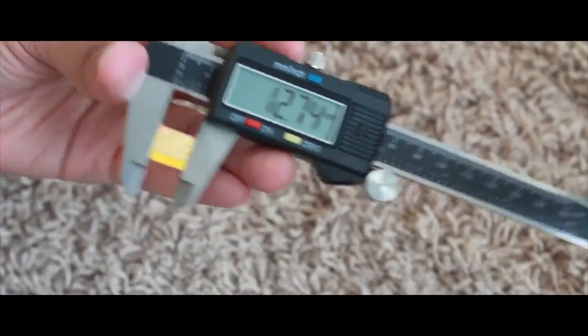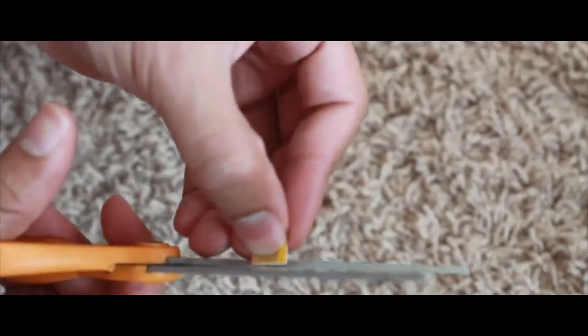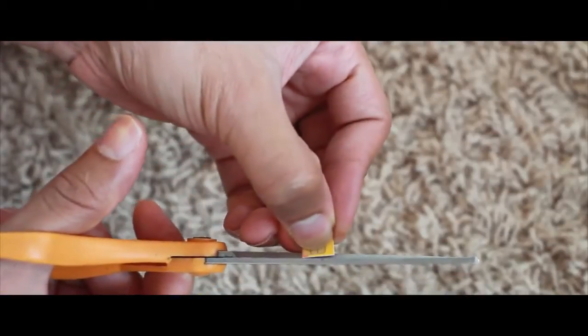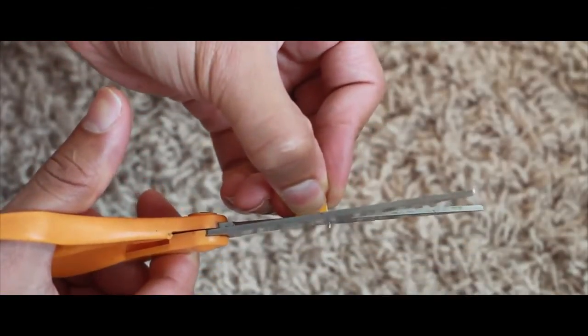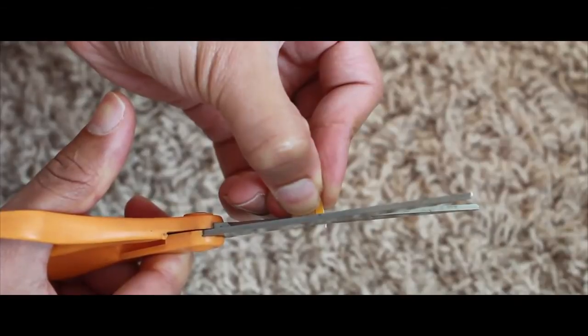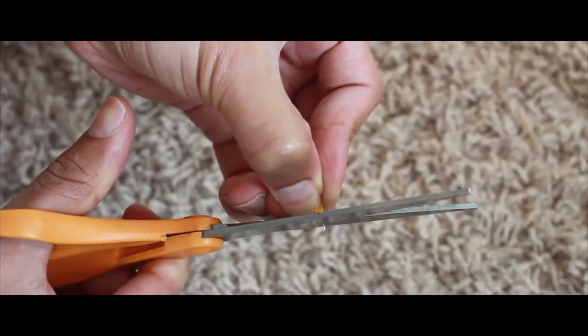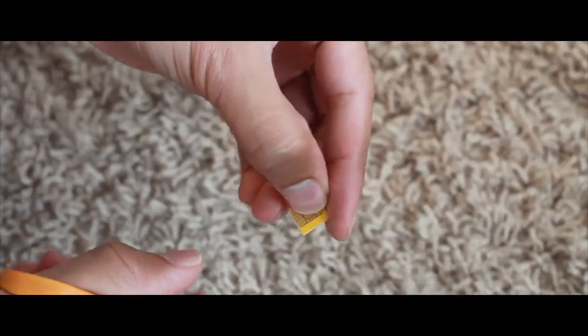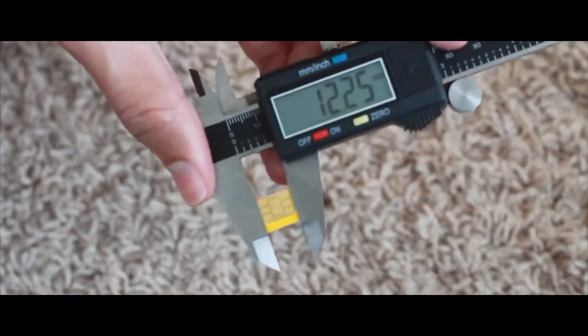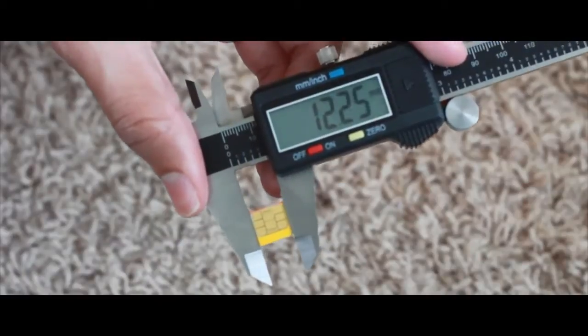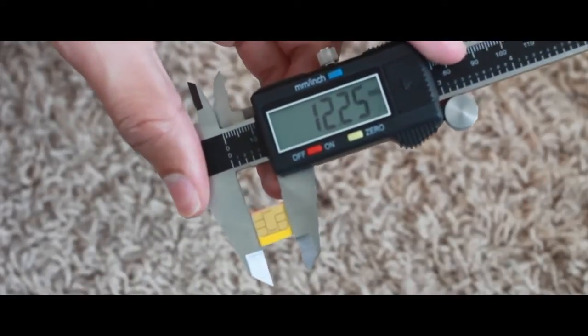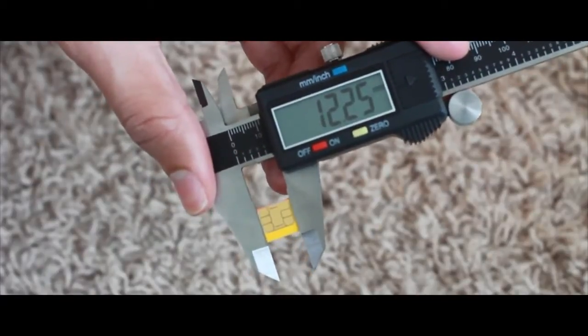We're just going to do a little more trimming here. Be really careful not to cut into the actual chip itself, get as close to the edge as possible without touching the chip. Now we're at about 12.25, so I got a little closer than I needed to, but that 0.05 millimeters shouldn't make that big of a difference once it's in the SIM card tray. We're good to go there.